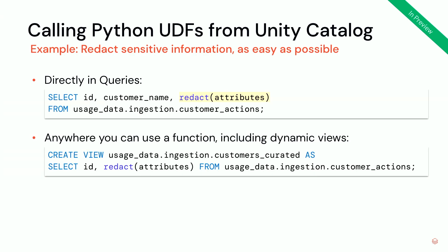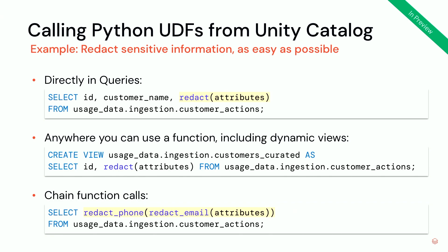Being a UDF in SQL, you can use it anywhere you can use a function, which also includes views. So let's say we want to create a view based on this UDF — we create a new view, and in the SELECT statement of that view we use that UDF, making it available in the view. You can then give users access to that view. One neat thing with UDFs is you can chain functions — for instance, one function to redact the phone and another to redact the email, and you can mix and match those. This also comes in handy combined with other built-in functions like secrets, so you can pass Databricks secrets or other SQL attributes and constants into the functions.